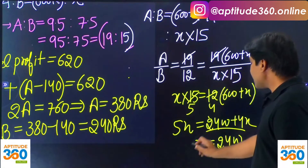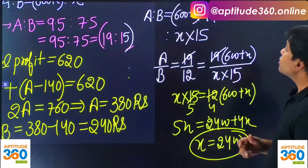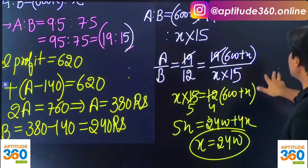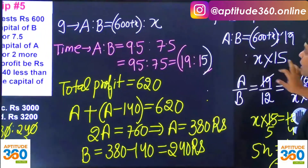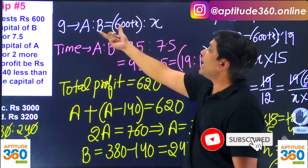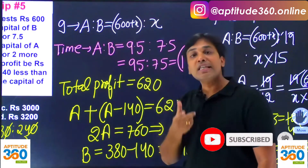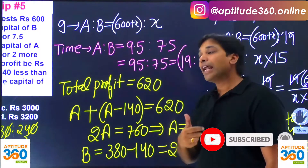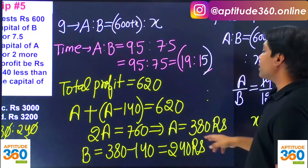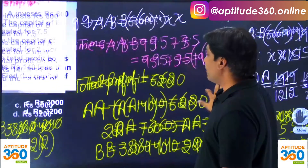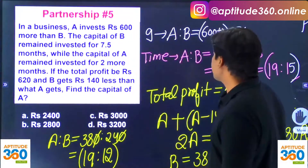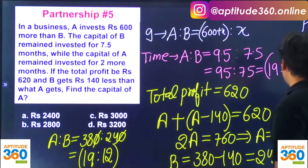So X is the value which B invested — 2400 rupees. A invested 600 rupees more than B, so the value of A comes out as 2400 plus 600, which is 3000 rupees. This matches option C. I hope you are getting this problem. Such problems require a bit of careful calculation.